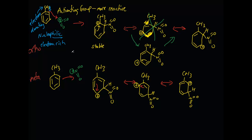What's the difference between ortho and meta positions? Primarily, in the ortho resonance structures you have the electron-donating group directly adjacent to a positive charge, but in meta you don't — you don't have a positive charge on the carbon adjacent to the methyl group in any of these three possible resonance structures. That's really the key.